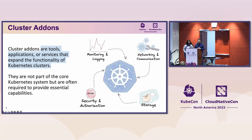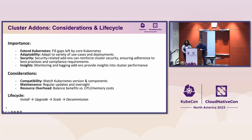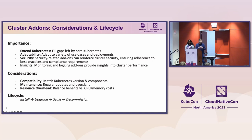Network and communication — think about service meshes like Istio. Security — you have your policies, OPA, Kyverno. And storage — an example could be Rook. Why are these important? They extend the capabilities of Kubernetes and adapt to different use cases. Depending on what you're doing, you might not need certain add-ons. For example, if you're solving a problem around security, you focus on security-related add-ons. Or if you care about insights, you'd look into monitoring and logging.